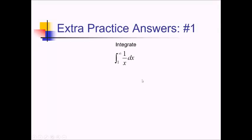For this problem, I'm trying to take the integral from 1 to infinity of 1 over x. The issue here is this infinite limit. To deal with this, I need to rewrite this using a limit as b approaches infinity of the integral from 1 to b, and then we still have the 1 over x dx inside there.